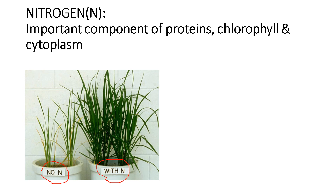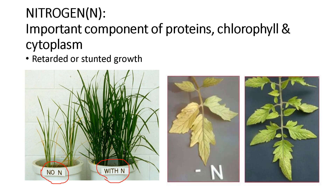So what do you conclude? The nitrogen deficient plant shows retarded or stunted growth. Now look at another picture showing the difference between leaves. Minus N stands for nitrogen deficiency. The leaves of the nitrogen-deficient plant are yellow in color, whereas the leaves of the plant with adequate nitrogen are green in color. So we conclude: nitrogen deficient plants show yellowing of leaves.